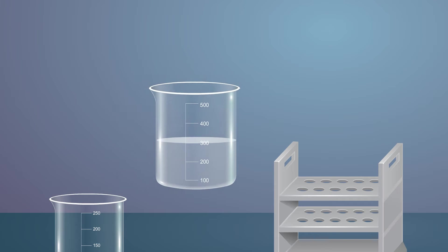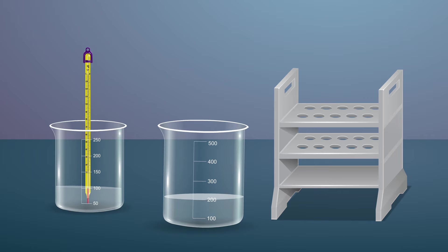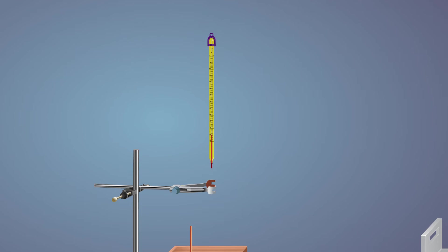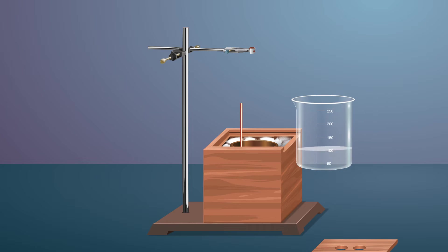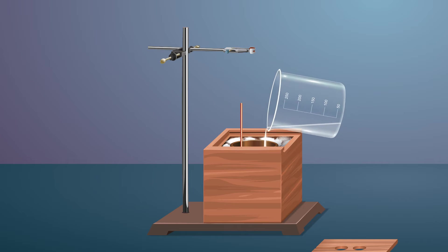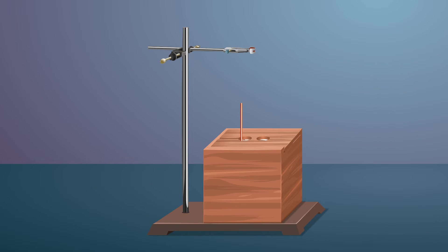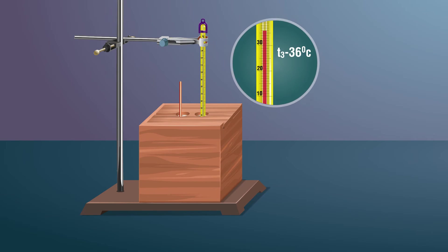Take 100 milliliters of this warm water in another beaker and note the temperature of this water; let it be T2 degree Celsius. Add the warm water from the beaker into the copper vessel without losing time. Stir the contents and read the temperature attained after mixing; let it be T3 degree Celsius.